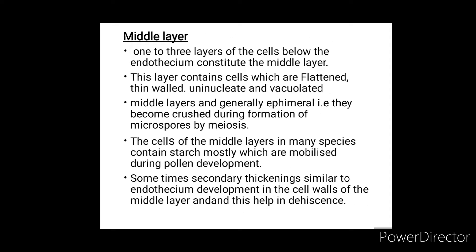Middle layer: one to three layers of cells below the endothecium constitute the middle layer. This layer contains cells which are flattened, thin-walled, uninucleate, and vacuolated. Middle layers are generally ephemeral — that is, they become crushed during formation of microspores by meiosis.